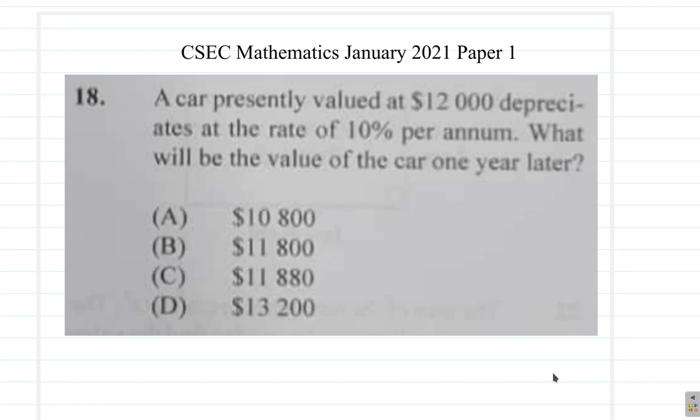Question 18 of the January 2021 CSEC Mathematics Paper 1: A car presently valued at $12,000 depreciates at a rate of 10% per annum. What will be the value of the car one year later?